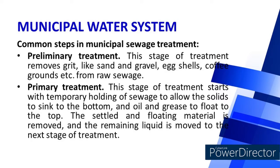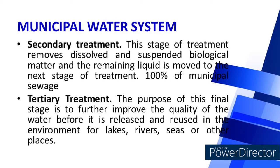After knowing the five key stages, let us determine the common steps in municipal sewage treatment. First is preliminary treatment, which removes grit like sand, gravel, eggshells, and coffee grounds from raw sewage. Next is primary treatment, which starts with temporary holding of sewage to allow solids to sink to the bottom and oil and grease to float to the top. The settled and floating material is removed and the remaining liquid moves to the next stage.